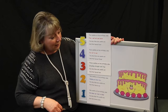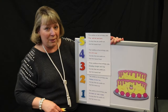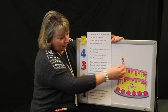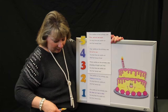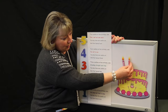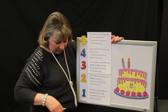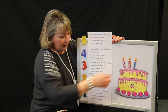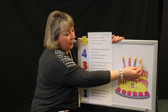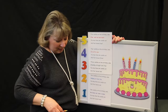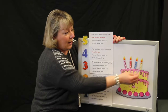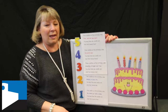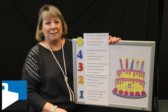We don't have any candles on our birthday cake. Let's count them and put them back on. One, two, three, four, and five. Five candles on the birthday cake.